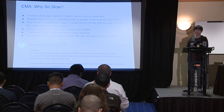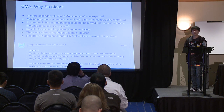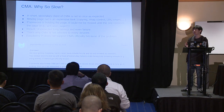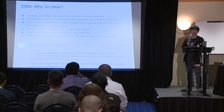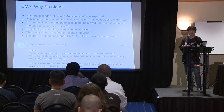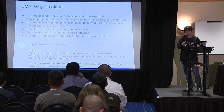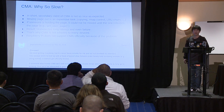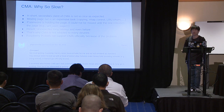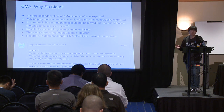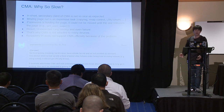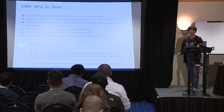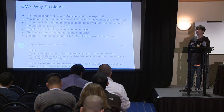Why is CMA so slow? In short, the secondary client of CMA was not as nice as expected. Moving a page out from the reserved area to some outer area is an expensive task — we must copy the content of the page and update the RMAP and LRU lists and more. If someone is holding the page, for example if a kernel thread is using get_user_page, we must wait until the kernel thread releases the page. As a result, it shows unexpectedly long latency and even allocation failure. That's why CMA is not widely adopted. For example, Raspberry Pi tried to use CMA as a device buffer but abandoned it after a while.